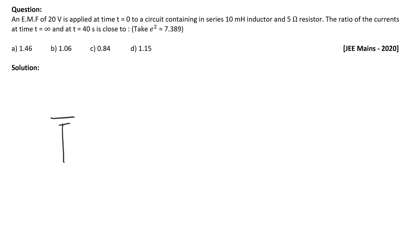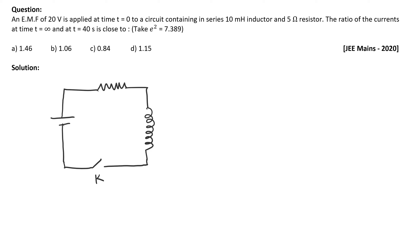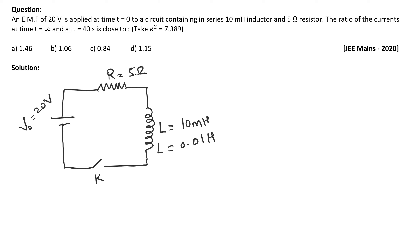Now let us solve the question. We have a circuit — in the circuit we have a battery, a resistor, an inductor, and a key. The inductor has inductance L given as 10 millihenries or 0.01 henries. The resistor is given as 5 ohms and the potential V₀ is given as 20 volts.